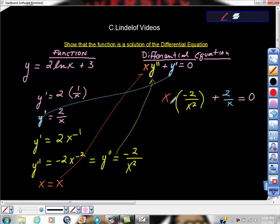So I'm going to go ahead and do this math, and x times negative two is negative two x over x squared plus two over x is equal to zero, question mark. We know that x over x squared is just x here. And isn't it true that negative two over x plus two over x is equal to zero? So there's our proof that this is a solution.